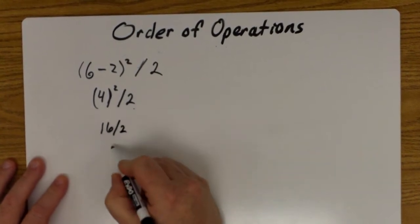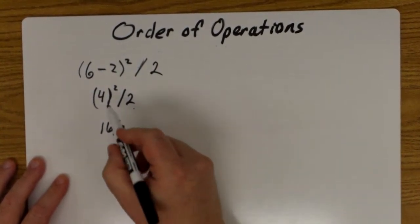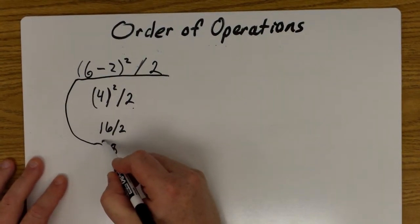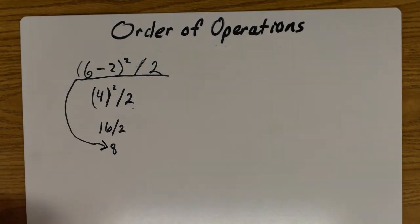And then divide by two, which gives us eight. So this expression up here is simplified down to just eight. This is equivalent to the expression at the top.